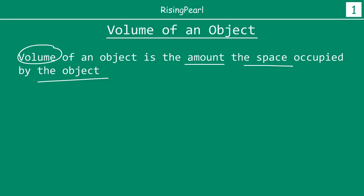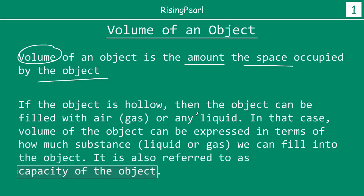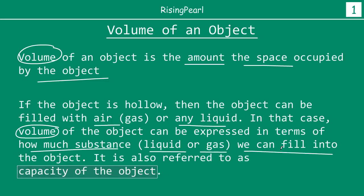If you look at a room which is in the shape of a cuboid, inside of the room is empty. If the object is hollow or empty, then the object can be filled with air or gas or any other liquid. In that case, the volume of the object can also be expressed in terms of how much substance, whether it is a liquid or gas, that we can fill into the object.